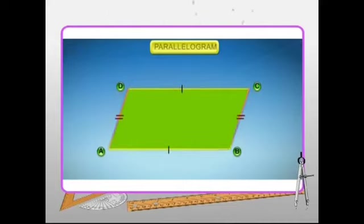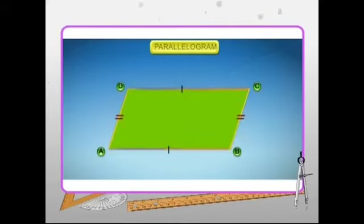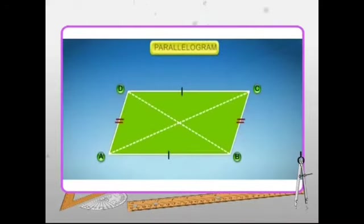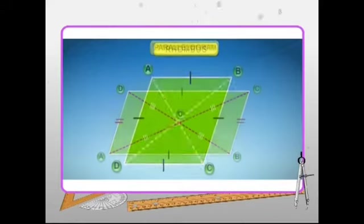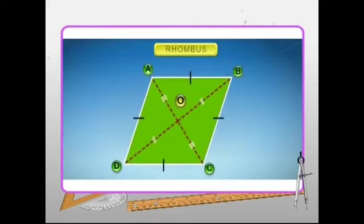In the figure, side AB is equal to side DC and side AD is equal to side BC. The diagonals of a parallelogram bisect each other. In the figure, AO is equal to OC and BO is equal to OD. The diagonals of a rhombus bisect each other at right angles.